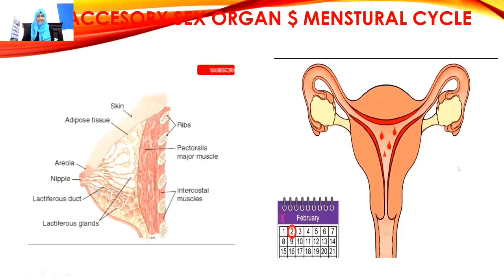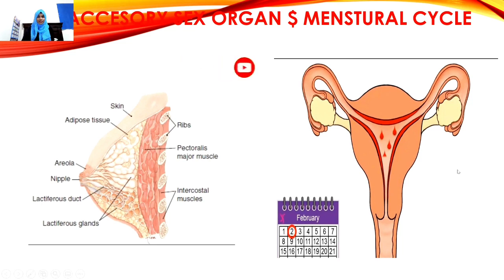Assalamualaikum, Surumi Saleem with you. Today's class is regarding accessory sex organs and the menstrual cycle. Last class we discussed OBG Part 1 regarding the female reproductive system, so we'll be continuing with the accessory sex organ, which is the breast, and the menstrual cycle.